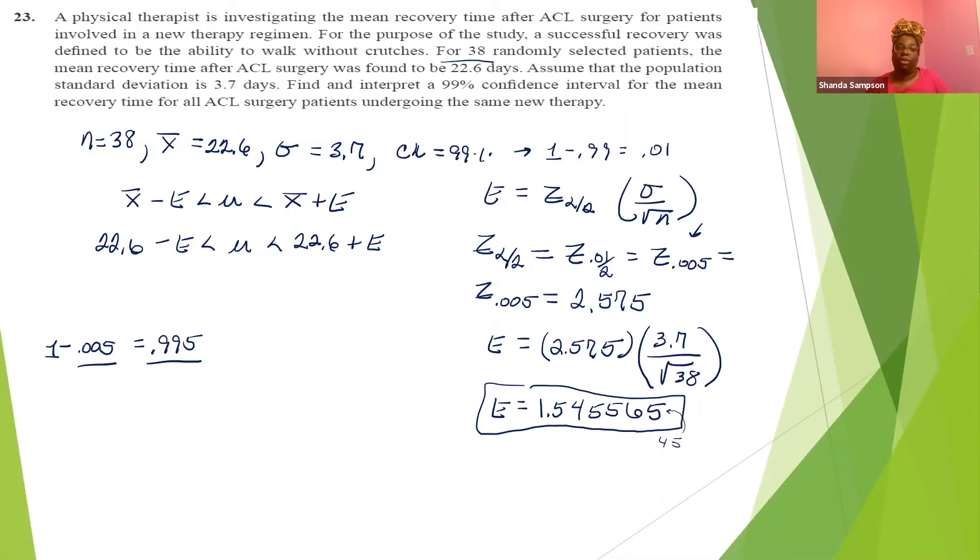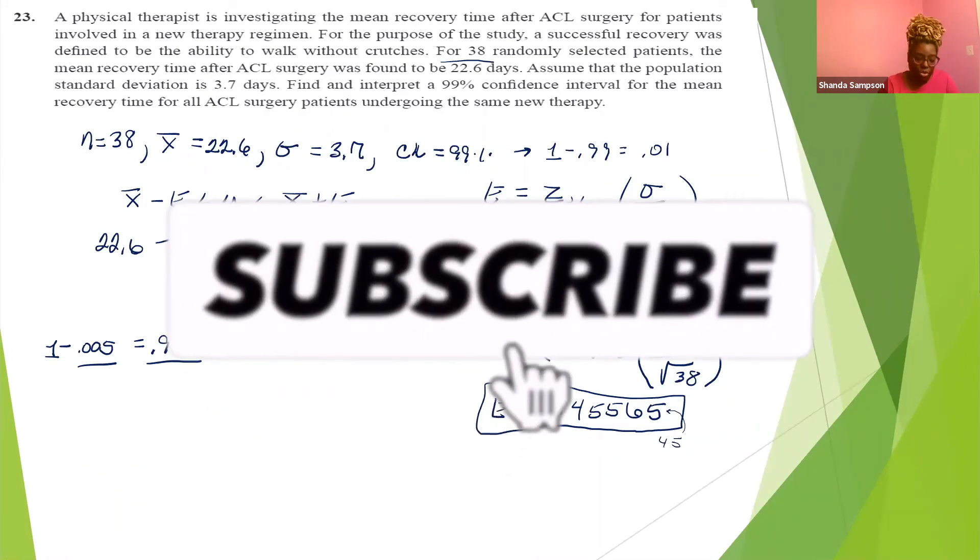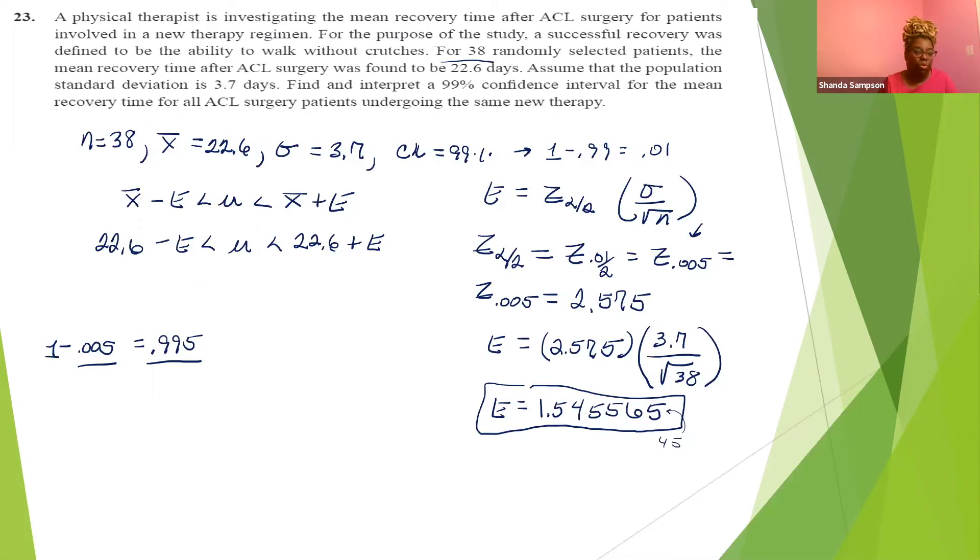So now I can go on my calculator and pop in all my numbers. Remember, where do we go? We go to stat, we go to test, we go down to Z interval. We're using stat. So we're going to put in sigma, sigma was 3.7. We're going to put in x bar, which was 22.6 days. We're going to put in n, which this time was 38. And then our confidence level was 99%, we're going to put in 0.99. And then we're going to get our answer 21.054 comma 24.146. So that should have been what your calculator gave you.